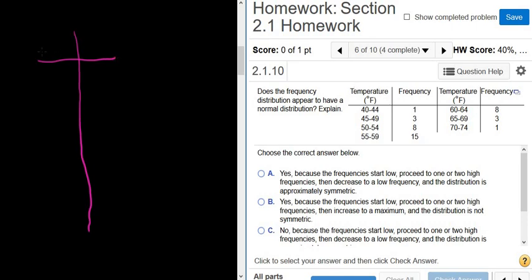The temperature here, those are called classes. Those are our classes. The first class is the class containing all the temperatures between 40 and 44. The second class is the class containing all the temperatures between 45 and 49, etc.